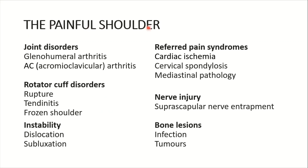The painful shoulder — I have summed up all the important causes in this slide. Shoulder pain can be due to joint disorders such as glenohumeral arthritis and acromioclavicular arthritis. Rotator cuff disorders, including tendonitis and frozen shoulder, can also be responsible. Instability, dislocation and subluxation of the shoulder joint can cause pain, as can referred pain syndromes resulting from cardiac ischemia, cervical spondylosis, and mediastinal pathology. Additionally, nerve injury such as suprascapular nerve entrapment, and bone lesions including infection and tumours, are important causes.